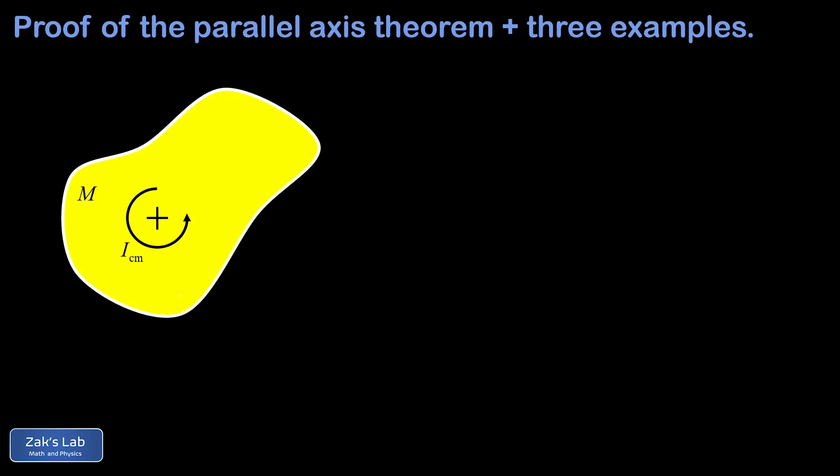In our picture we have just some arbitrary rigid body with a mass big M and we've labeled its center of mass and a rotation axis. The rotation axis is pointing out of the screen and we're imagining twisting this rigid body about that rotation axis, giving us a moment of inertia that we call I_CM for center of mass.